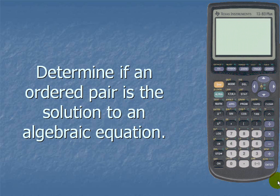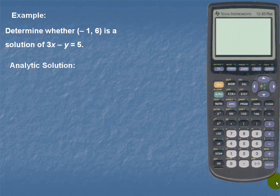Determine if an ordered pair is the solution to an algebraic equation. Example: determine whether the ordered pair negative 1 comma 6 is a solution of the equation 3x minus y is equal to 5.